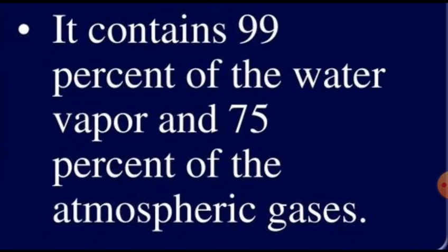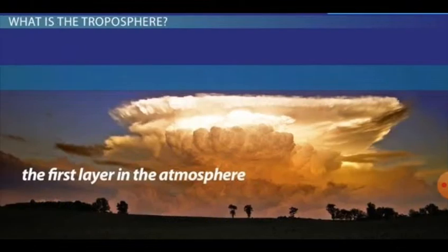99% of the water vapor in the atmosphere is found in the troposphere. Therefore, all weather related phenomena such as formation of cloud, rain, fog, winds and storms take place in the troposphere.